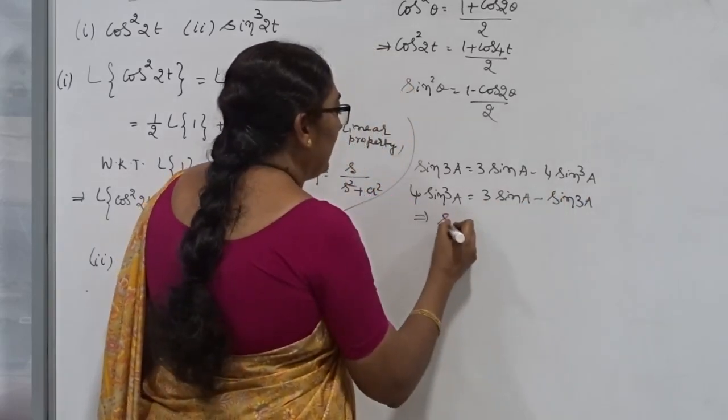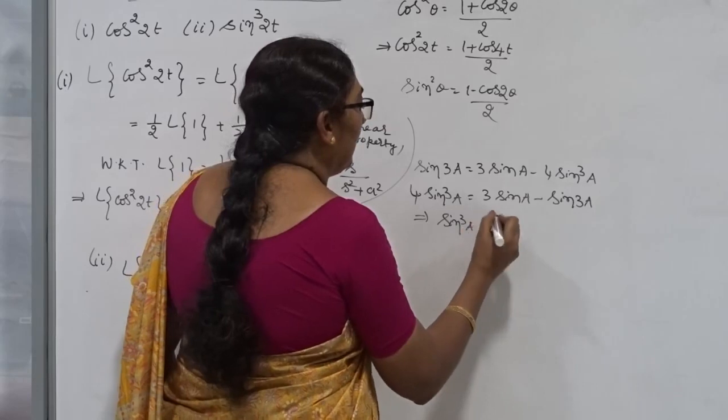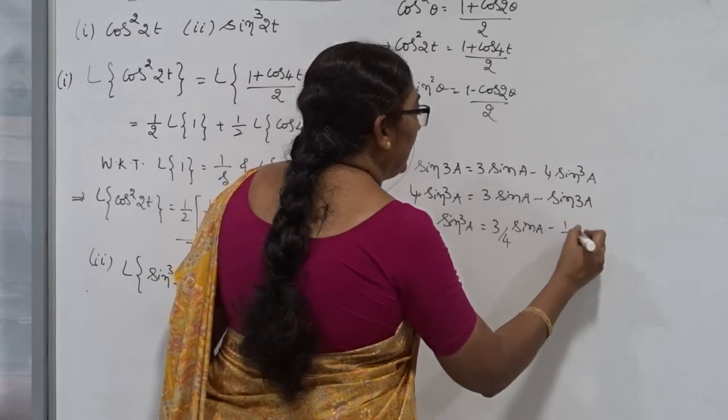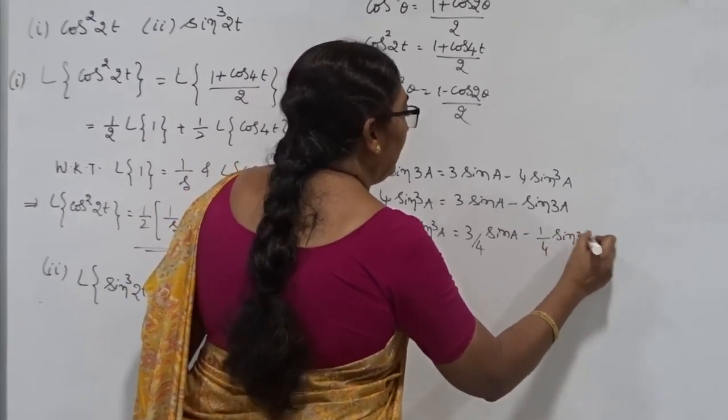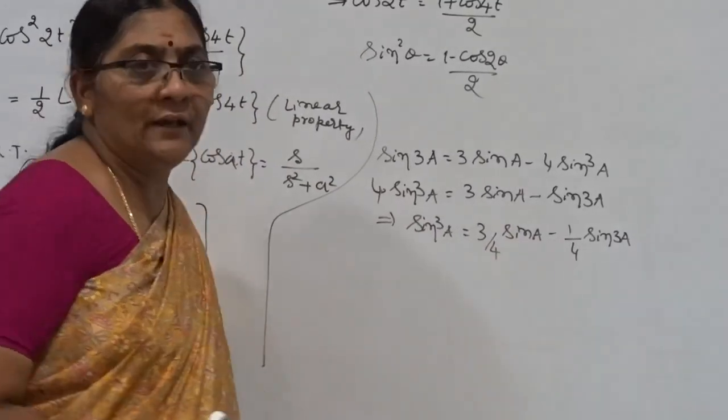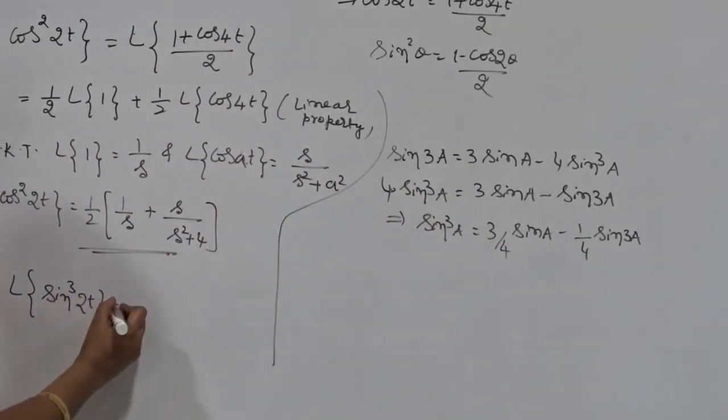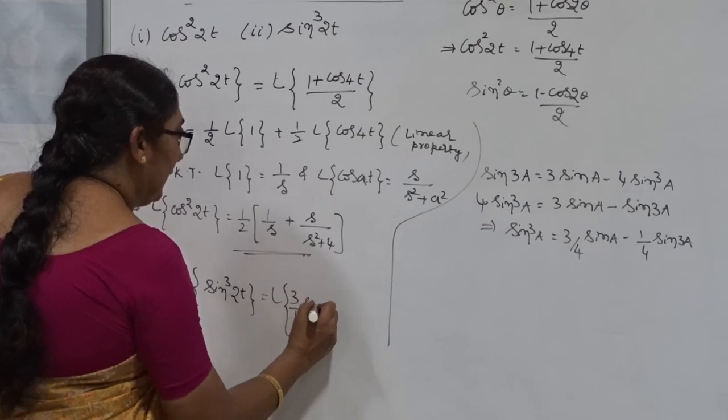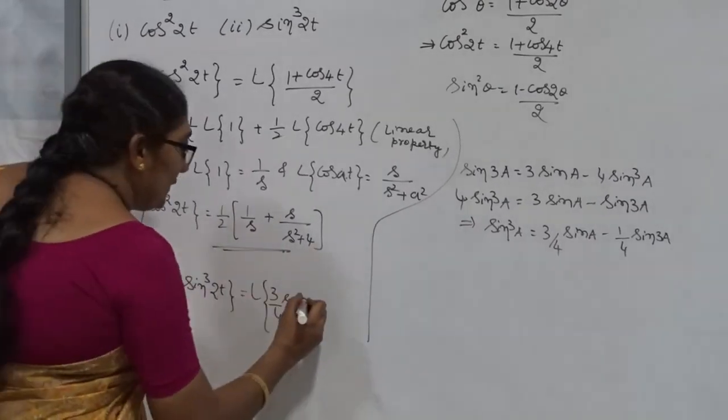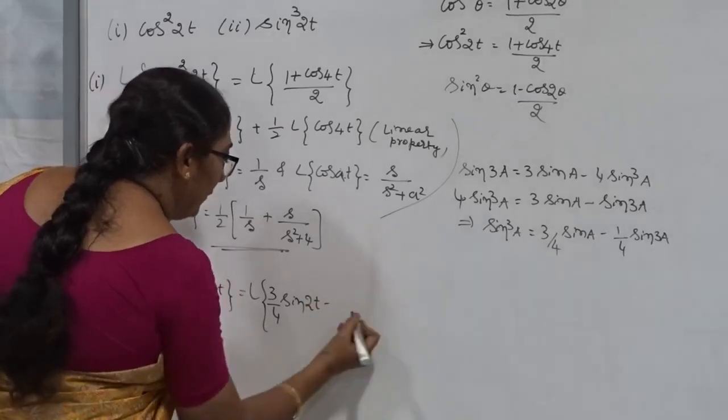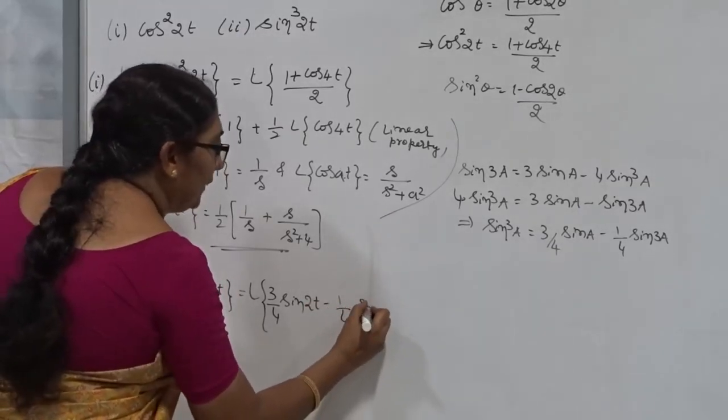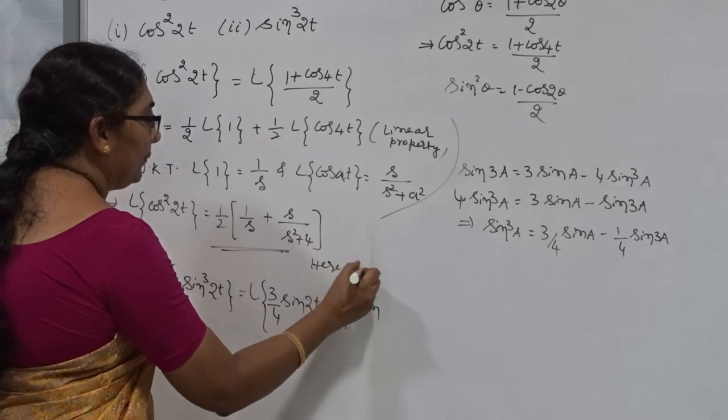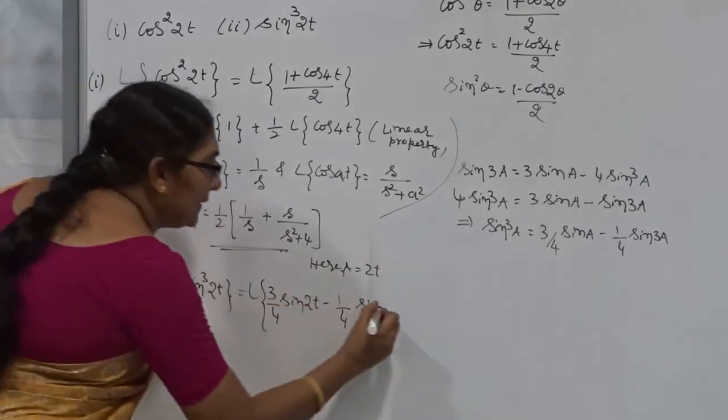That implies, what is my sine³a here? Sine³a is nothing but 3 by 4 sine a minus 1 by 4 sine 3a. We know that the formula for Laplace of sine a, therefore, then I am going to express Laplace of sine³2t is nothing but Laplace Transform of 3 by 4 sine, instead of a, what we have? 2t. Sine 2t minus 1 by 4 sine of, what is my a is? Here, a is equal to 2t. 3a is 6t.